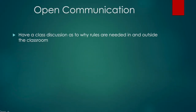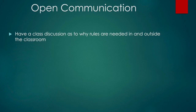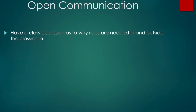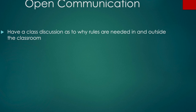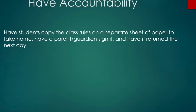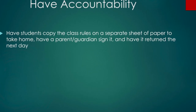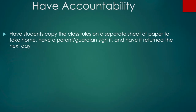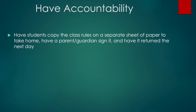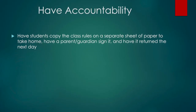Have a class discussion as to why the rules are needed in and outside the classroom. For example, why do we walk and not run in the hallway? Or why is it important to keep your hands to yourself? Lastly, hold students and parents accountable. By doing this, everyone knows what's expected in the classroom. You can do this by giving them a contract to sign.